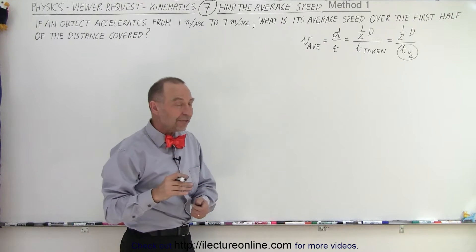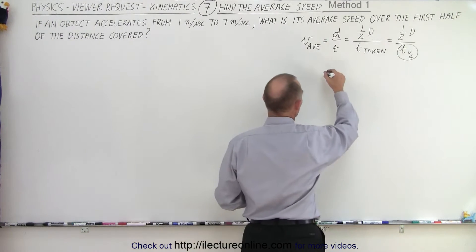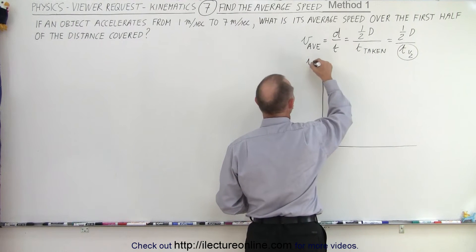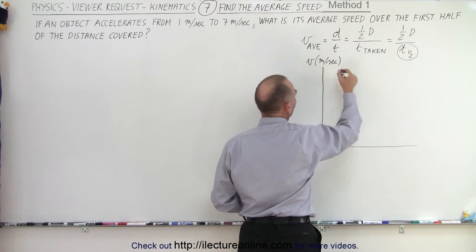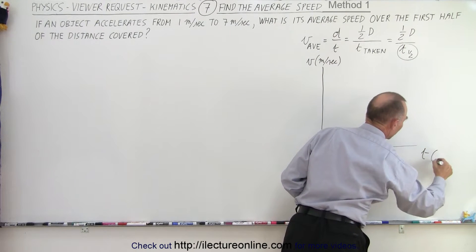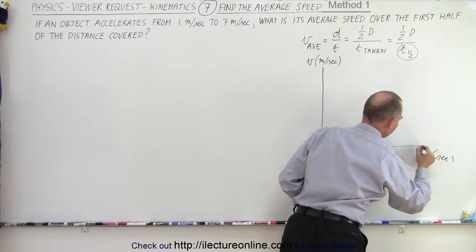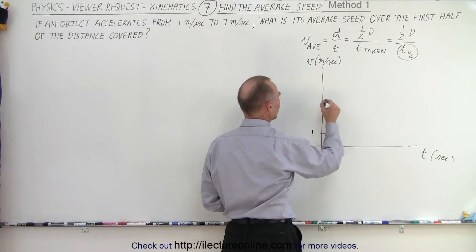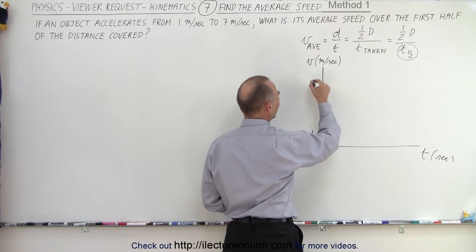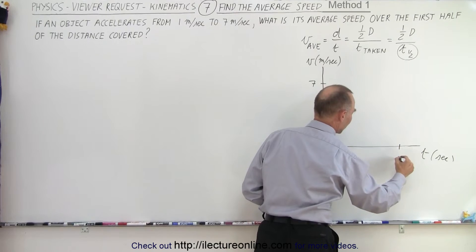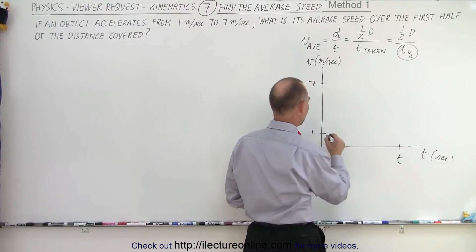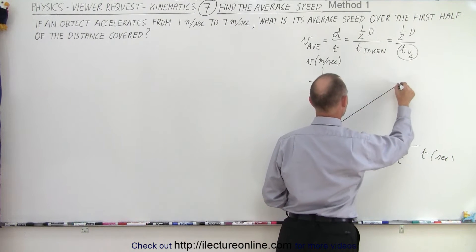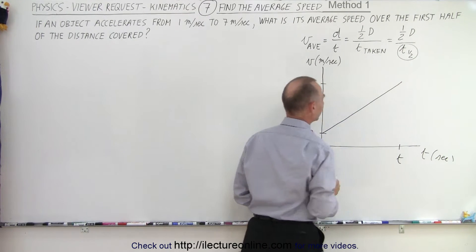If we graph this on a velocity versus time graph — velocity in meters per second on the vertical axis and time in seconds on the horizontal — we don't know how much time it took, but it accelerates from 1 meter per second to 7 meters per second over some total time T. So the graph goes from here to here, like this — that's what the graph would look like.